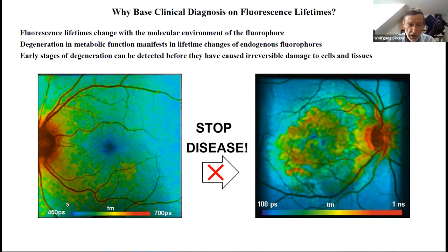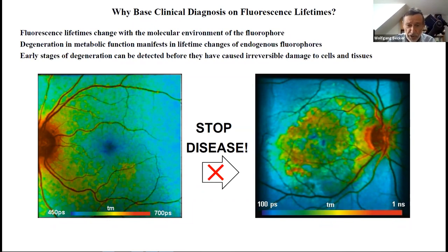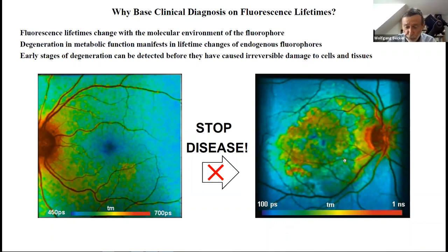Here is an example. This patient has some strange deposits along the blood vessels. Is this possibly a pre-stage of age-related macular degeneration? If we can find this out, there's a chance that we can stop the disease before it causes any irreversible damage.